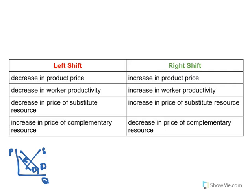The first two shifters — product price and worker productivity — are probably the ones you're going to see most on an AP question, but occasionally you do get one about substitutes or complements. That's all for this video on the labor demand curve. Until next time, have a great day.